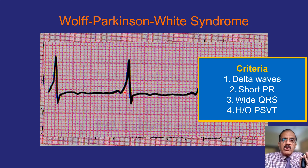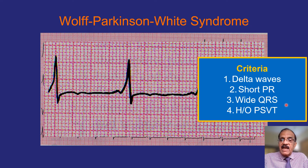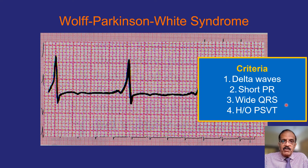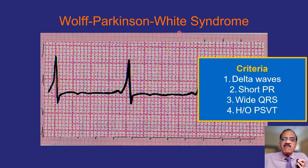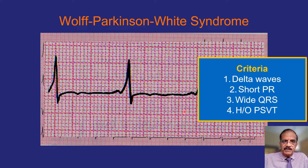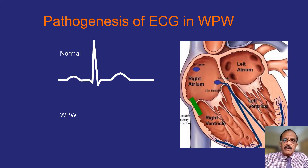The QRS is wide because the delta wave is added; it is broader than normal but not as wide as in ventricular tachycardia or bundle branch block. Many patients also have a history of paroxysmal supraventricular tachycardias. For the full diagnosis of Wolf-Parkinson-White syndrome, you need both these ECG abnormalities and a history of paroxysmal SVT.